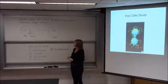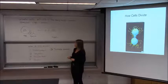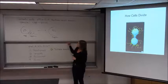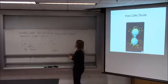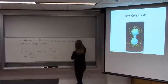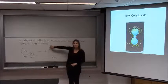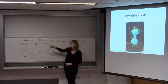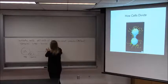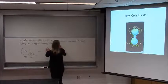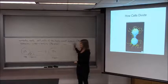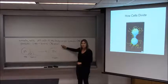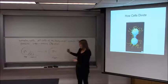Division of the somatic cells is called mitosis. The division of cells to make eggs and sperm is going to be called meiosis. We're going to start by talking about mitosis and then talk about meiosis — two different processes.